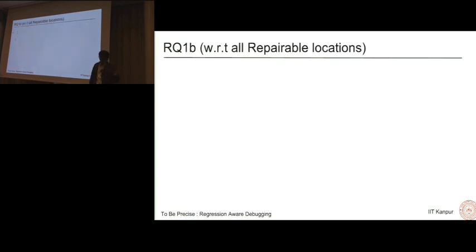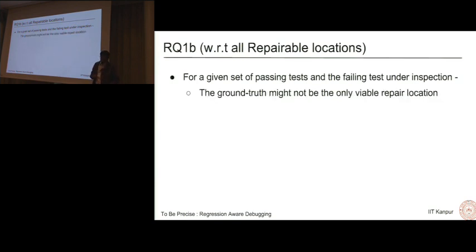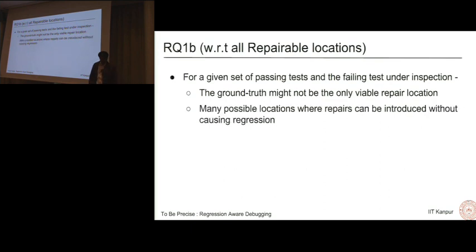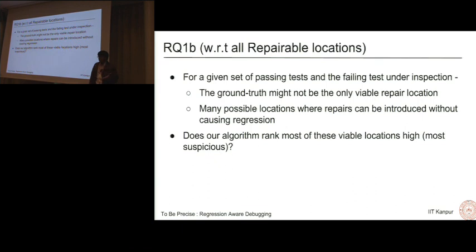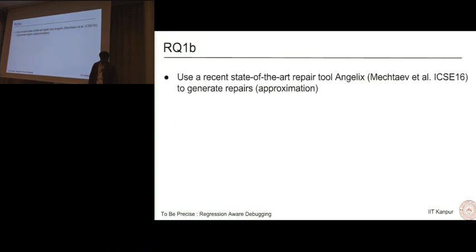The second part of the research question is with respect to all repairable locations. The idea here is that for a given set of passing tests and the failing test under inspection, the ground truth might not be the only viable repair. There might be many possible locations where repairs can be introduced without causing regression. It will be okay for all the passing tests and it will fix the failing test as well. You might be biased towards the ground truth because you already know it, but in a realistic setting, there might be many repairs possible. And does our algorithm rank most of these locations high? Then it can actually imply that our tool does rank repairs higher.